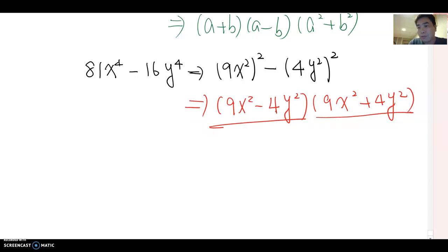Can we do one more time? Yes, it does. So this becomes, you can rewrite it, 3x squared minus 2y squared. And then this term the same: 9x squared plus 4y squared. Then this is complete a squared minus b squared.